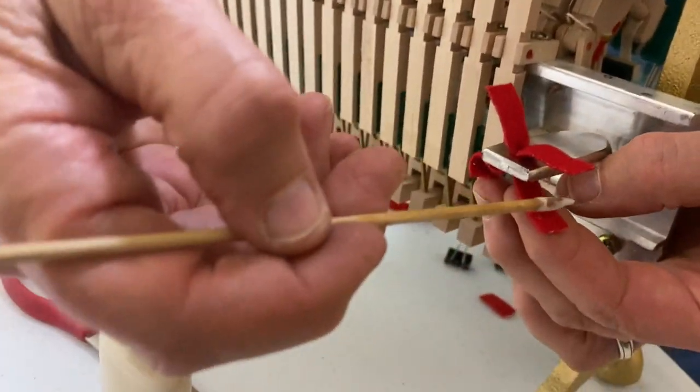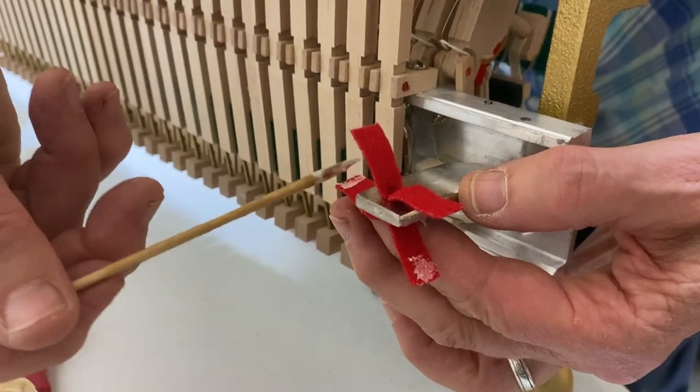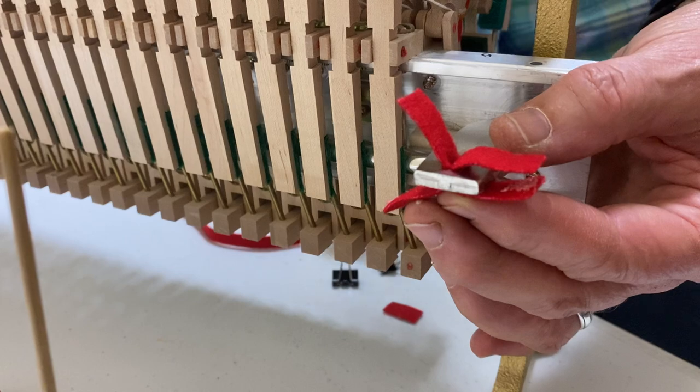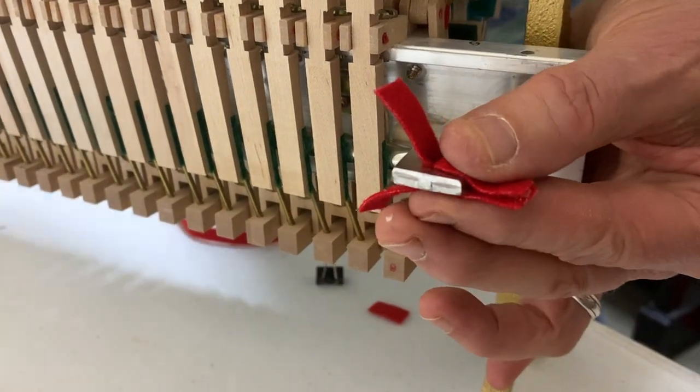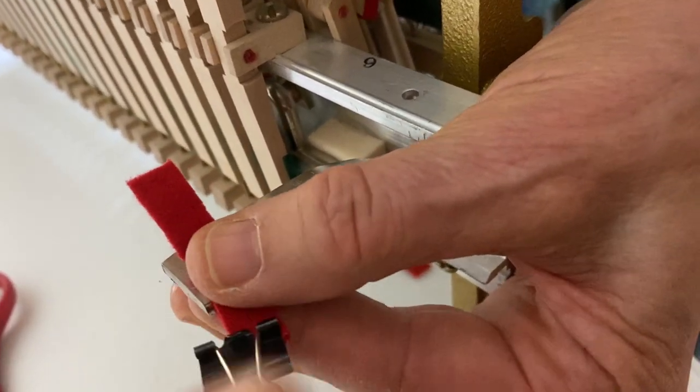I put glue, just a little dab at the end of each of the flaps, and then I use these tiny binder clips.